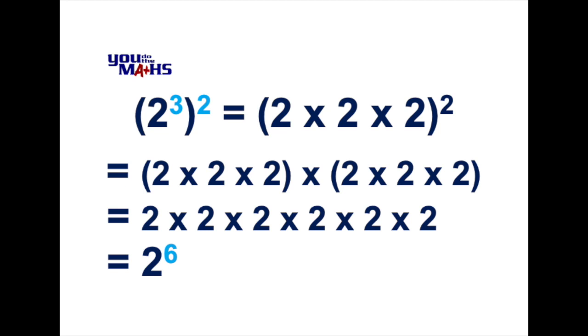So we have the basic rule for indices expressed with one outside the bracket. That is, if you've got two indices next to each other in a bracket, like we have originally 2 to the power 3 all squared, we can multiply those values. So in this case 3 multiplied by 2 is equal to 6.